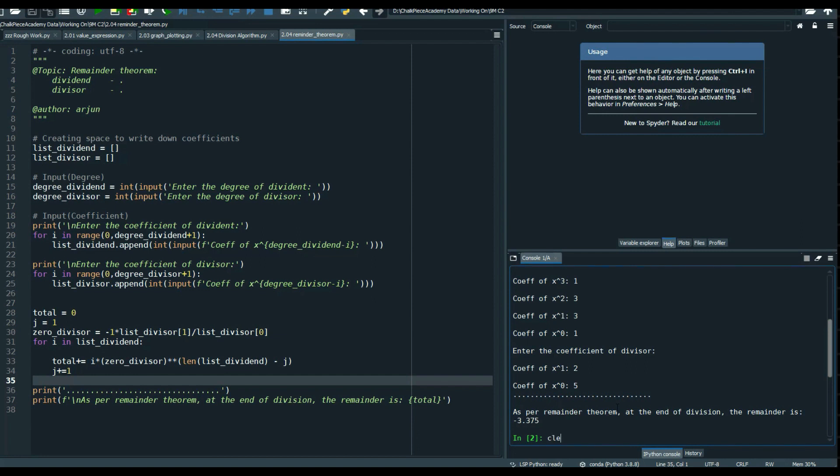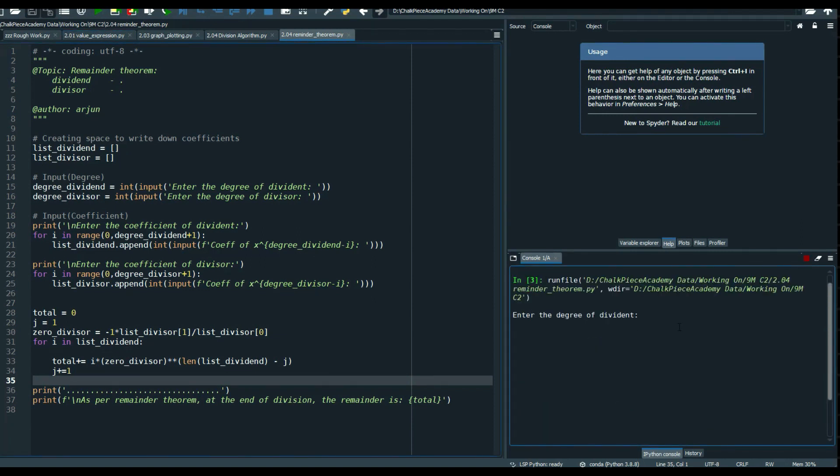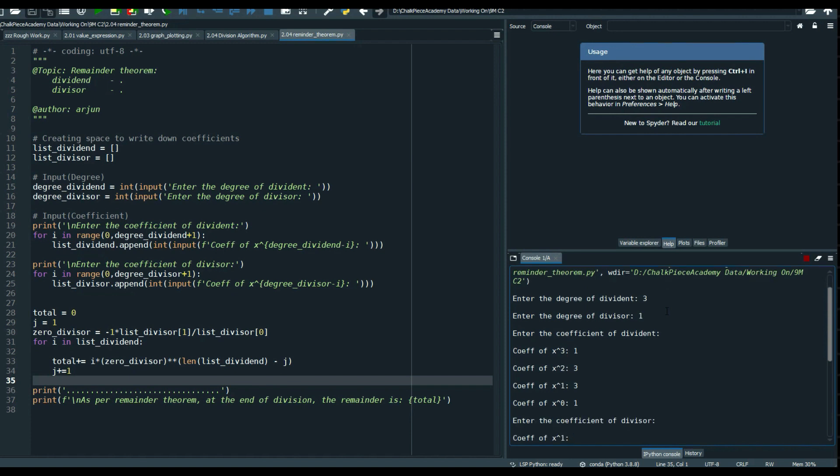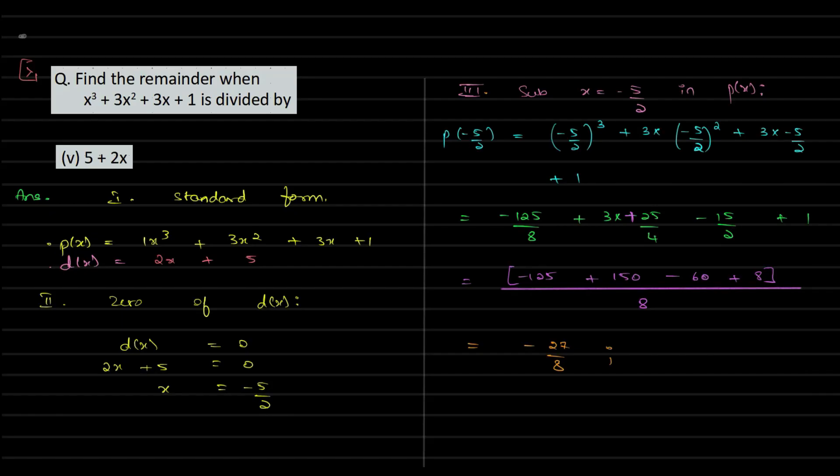Using our remainder theorem coded version. The polynomial coefficients are 1, 3, 3, 1 for degrees 3, 2, 1, 0, and the divisor coefficients are 2 and 5.